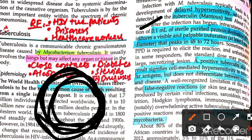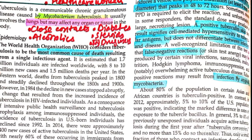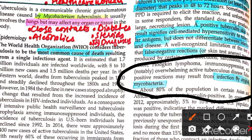By measuring the induration, we know how much immunity the patient has. A positive test means our body is fighting and our body's immunity is good against TB. There can also be a false negative — when there is atypical mycobacteria in the body, we may think the patient has TB and test them.